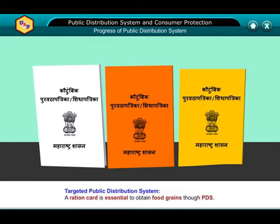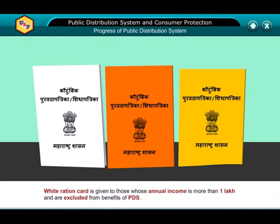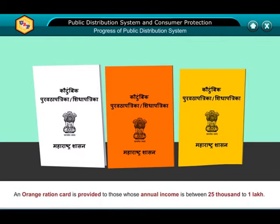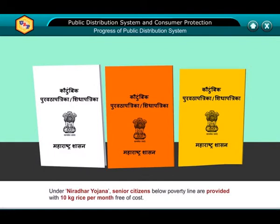Targeted Public Distribution System: A ration card is essential to obtain food grains through PDS. It contains information regarding the number of family members, and accordingly food grains are supplied through a particular fair price shop. A white ration card is given to those whose annual income is more than 1 lakh, who are excluded from the benefits of PDS. An orange ration card is provided to those whose annual income is between 25,000 to 1 lakh. Families below the poverty line have a yellow ration card. Under the Antyodaya scheme, very poor people are provided food grains at the lowest prices. Under Niradhar Yojana, senior citizens below poverty line are provided with 10 kg of rice per month free of cost.